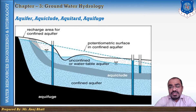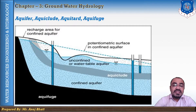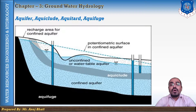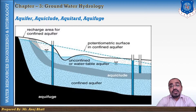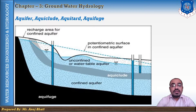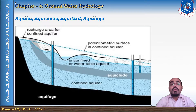Aquifuge is a geological formation of relatively impermeable material which neither contains nor transmits water — for example, solid rocks which do not contain water and also do not allow water to pass through. These are the four major geological formations which help us understand many more concepts in this lecture.